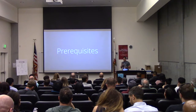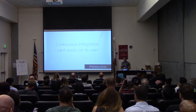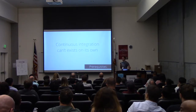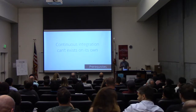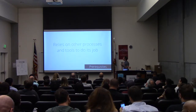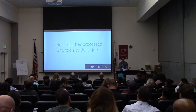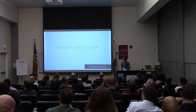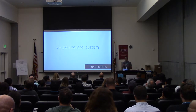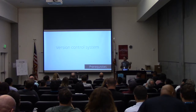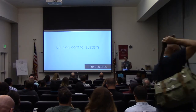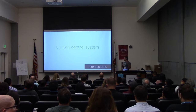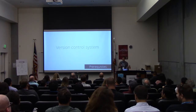What do you need to do continuous integration? Because continuous integration can exist on its own — it's not just a piece of software you install and you're done. It actually relies on other processes and tools to do this job. The biggest one — it seems a bit obvious to mention it — but you do need a version control system. You need Git, you need SVN, or if you're in the gaming industry, Perforce. Whatever it is, you need one. Because you need your system to check out code, get it, run it, test it.